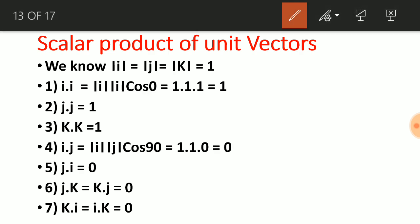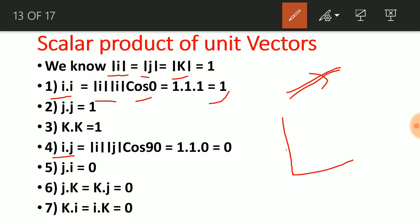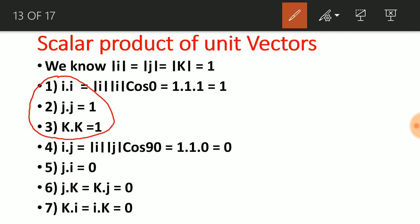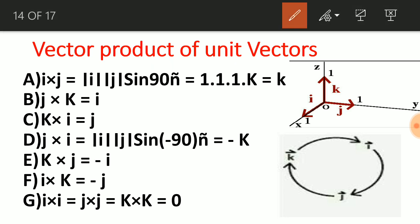Let us see the scalar product of unit vectors. For i·i: using the definition A·B = AB cosθ, a vector makes 0° with itself, and the magnitudes of i, j, k are all 1, so i·i = 1×1×cos0° = 1. Similarly j·j = 1 and k·k = 1. But i and j are perpendicular axes making 90°, and cos90° = 0, so i·j = 0. Likewise j·i, j·k, k·j, and all mixed terms equal zero. Only same-axis terms (i·i, j·j, k·k) equal 1.